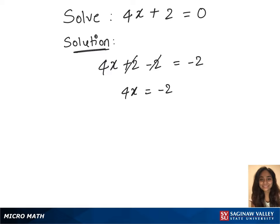Divide both sides by 4: x equals minus 2 over 4. Since 2 times 2 is 4, this simplifies to minus 1 over 2. And that's our answer: x equals minus 1 over 2.